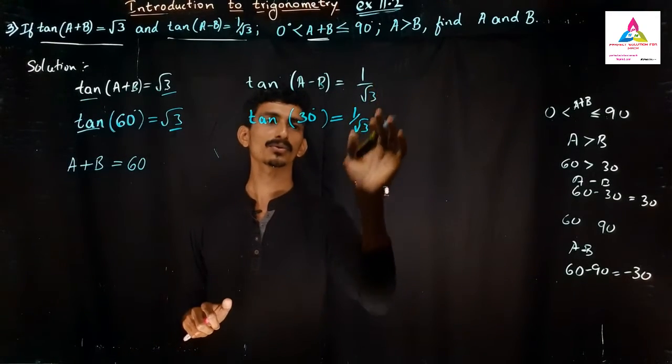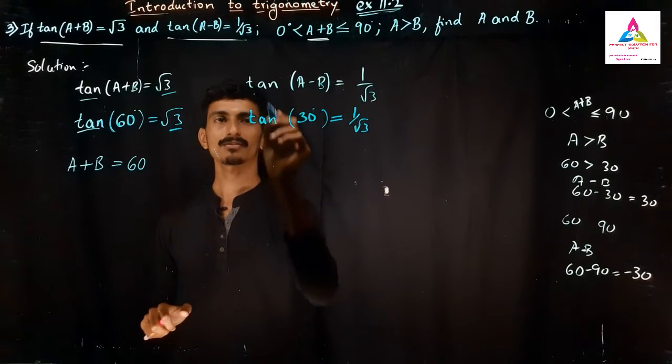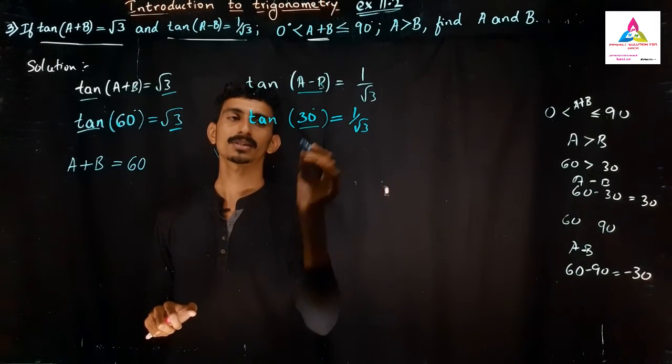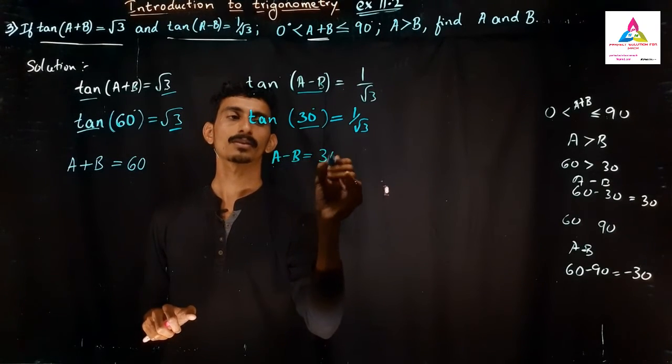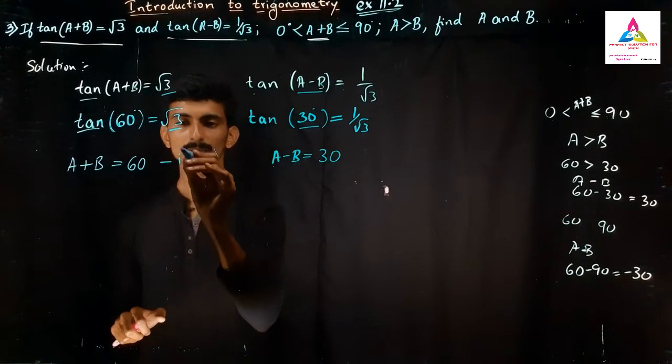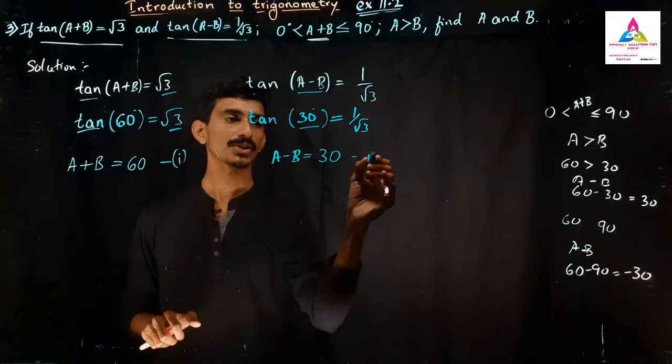Similarly we have 1 by root 3. 1 by root 3 is the same. And tan functions we have both the sides. So obviously A-B is nothing but 30. So A-B value will become 30. So now it is acting as equation 1, and the equation 2 for us.